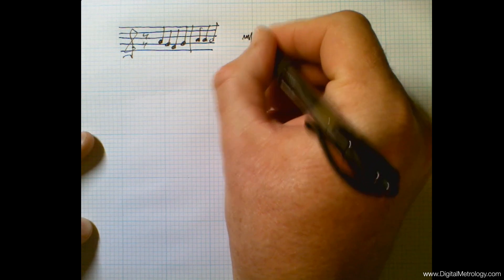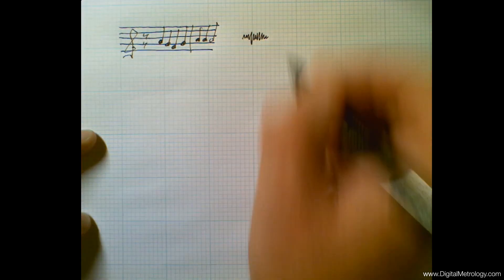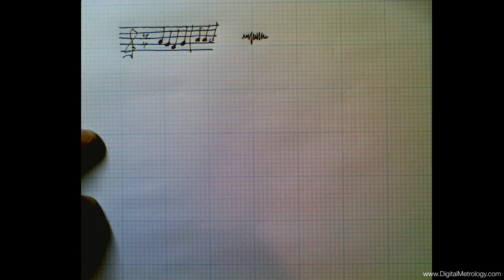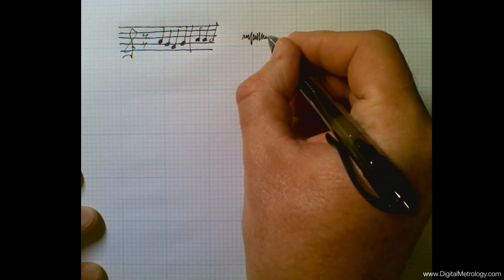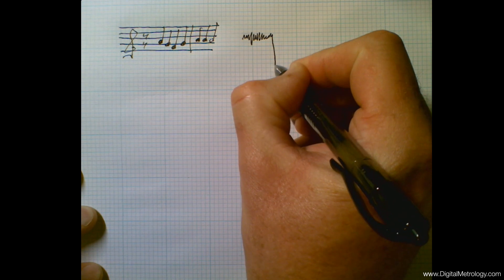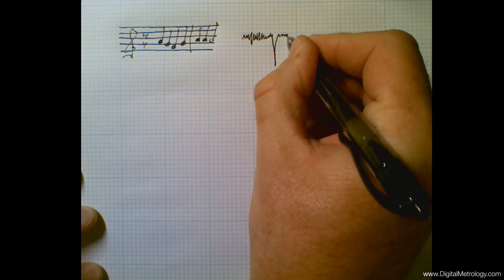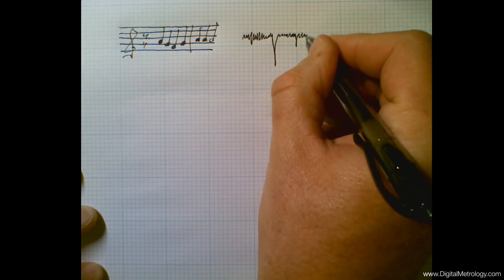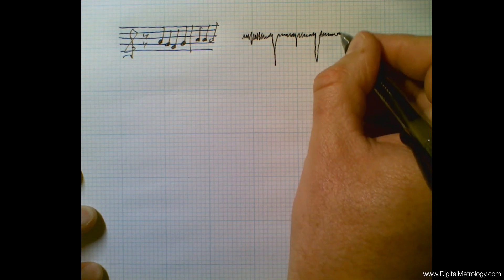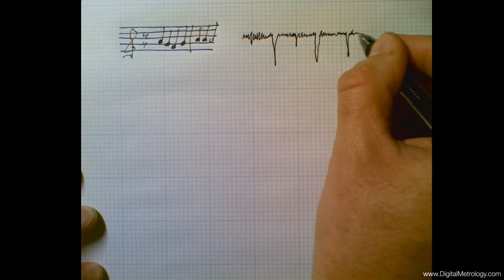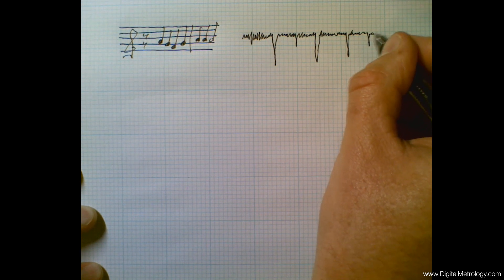But if we were to take the same thinking into surface texture, how long do we need to measure to know what this surface really looks like? Here's a little bit of data that might lead us to believe this surface looks kind of random, but had we kept going we may encounter some valleys in the surface and find out it's not necessarily a random surface but it's a plateaued surface with deep valleys occurring every once in a while.